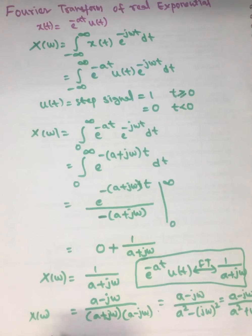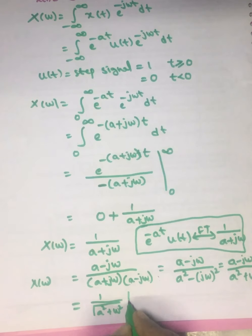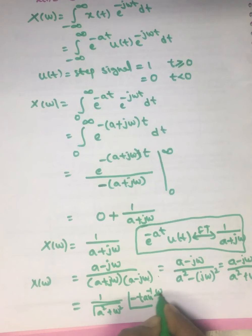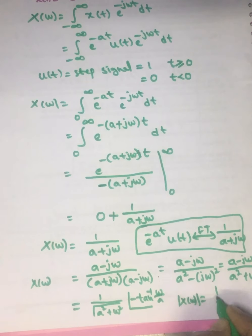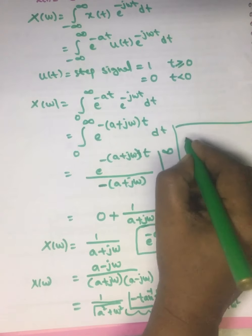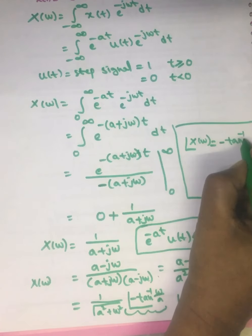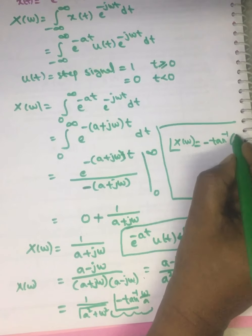From this expression, we write the magnitude and phase. Writing X(ω) in polar form, the magnitude is |X(ω)| = 1 / √(a² + ω²), and the angle is ∠X(ω) = -tan⁻¹(ω/a). So the magnitude is 1 over the square root of a² plus ω², and the phase angle is minus tan inverse of ω by a.